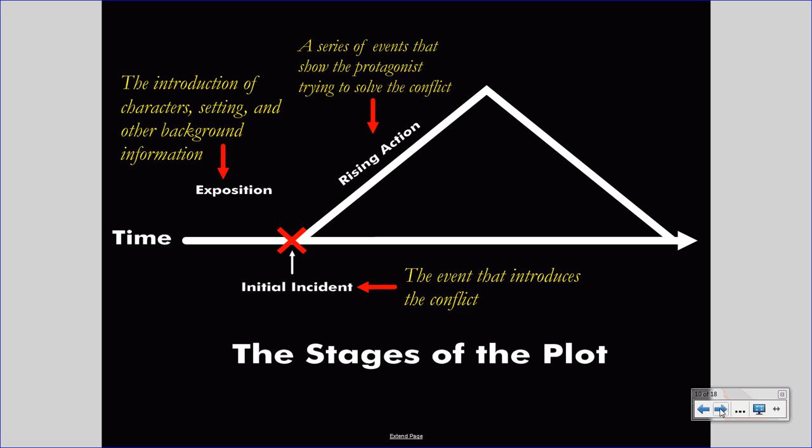Next, the rising action occurs. The rising action is a series of events that show the protagonist trying to solve the conflict. As the protagonist attempts to resolve the challenge and solve the conflict, events proceed. And often, as those events proceed, they intensify. Hence, the diagram rises up a slope to show that intensity rising. The issues usually become more serious as mistakes are made, successes are made, even though short-lived.